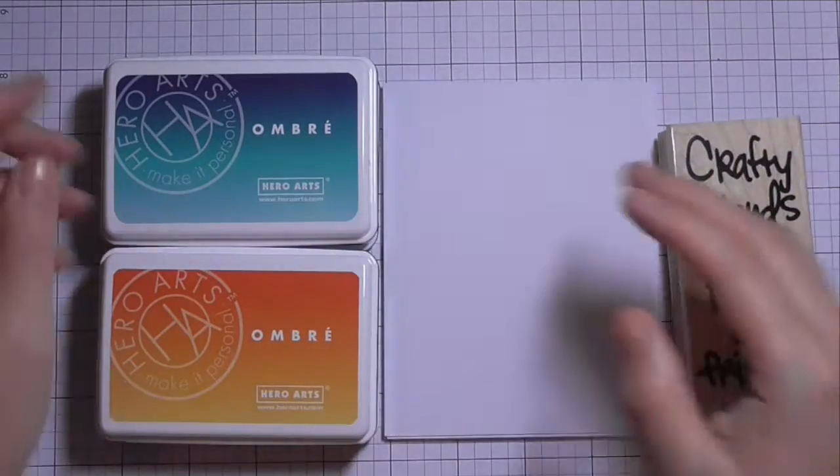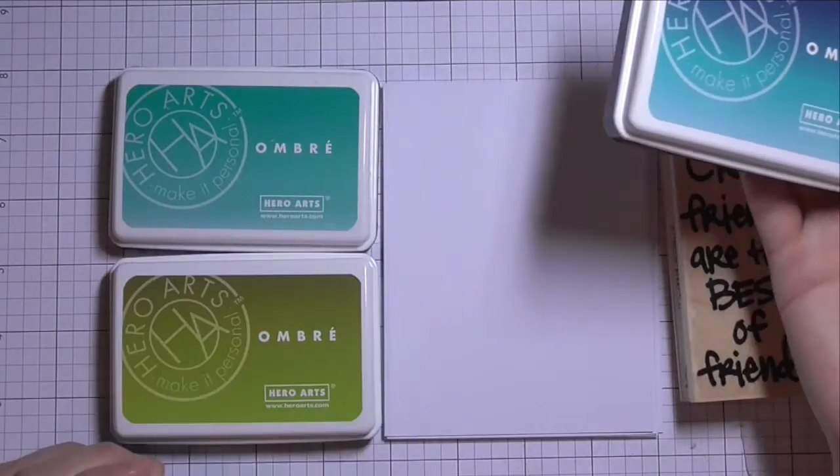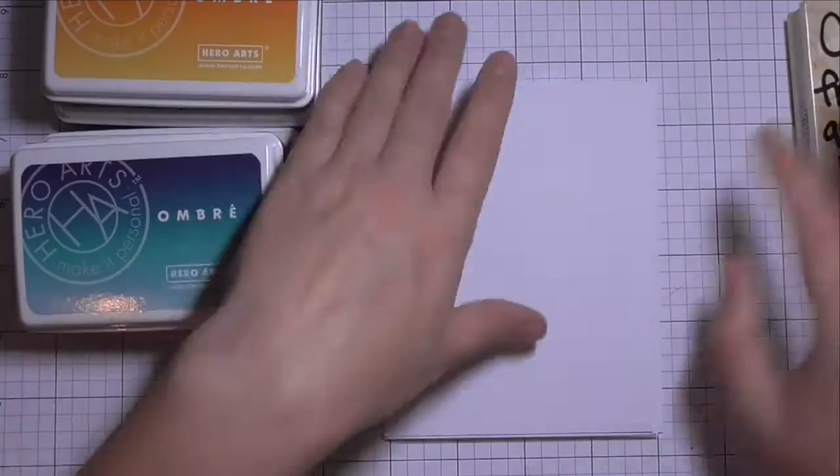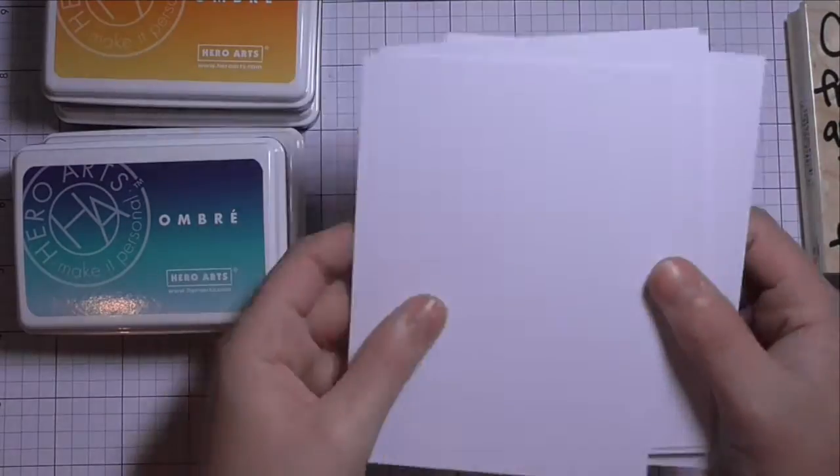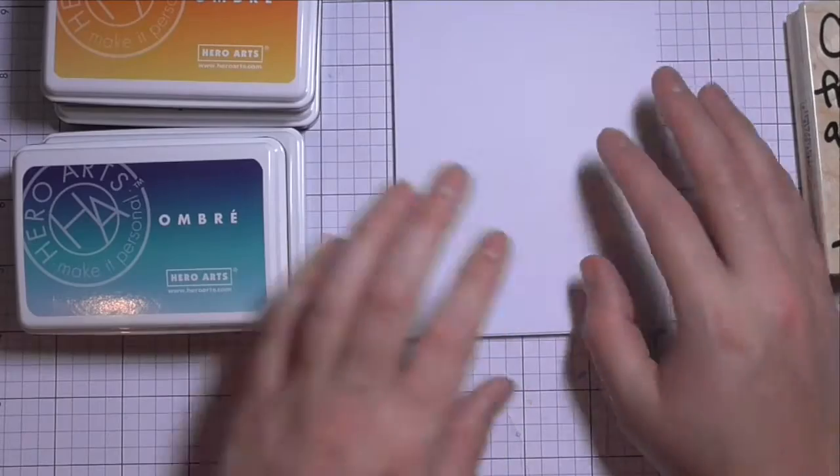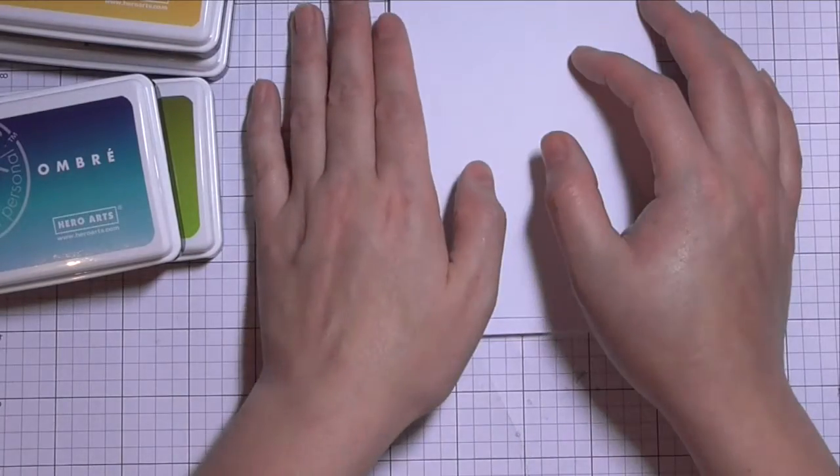I'll be using the Crafty Friends stamp from Hero Arts as well as some of their Ombre ink pads. And I'll be stamping down onto some pre-cut white cardstock. So I'm going to be making multiple cards today, so I've got a few of these pre-cut.